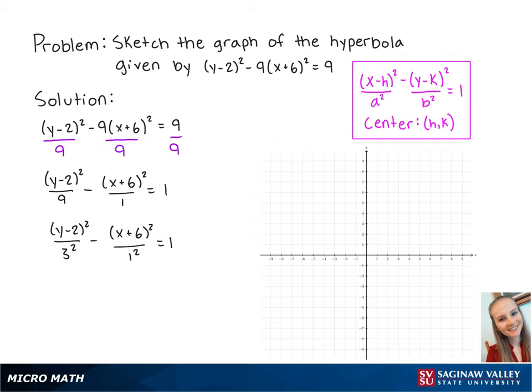Now that we have our equation in standard form, we can see that a equals 1 and will be horizontal since it is under the x, b equals 3 and will be vertical since it is under the y, and the center is at (-6, 2).